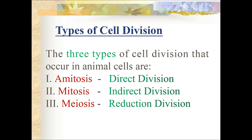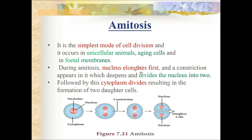There are three types of cell division: amitosis, mitosis, and meiosis. Amitosis is otherwise called direct division. Mitosis is called indirect division, and meiosis is called reduction division.